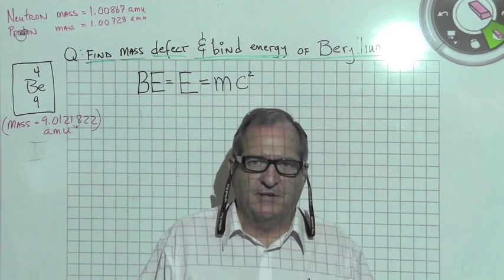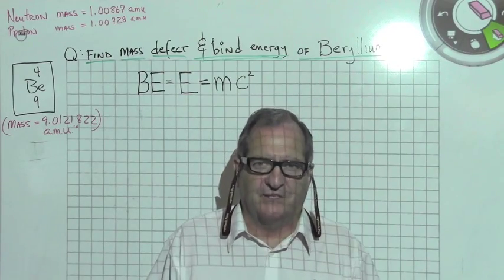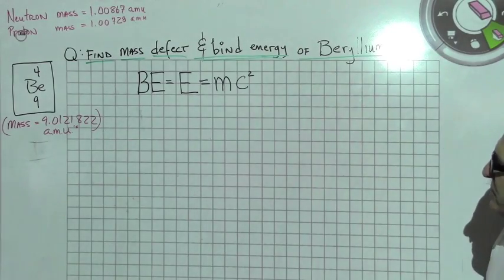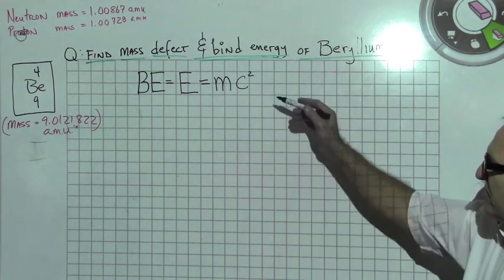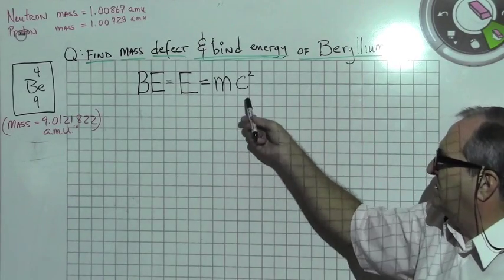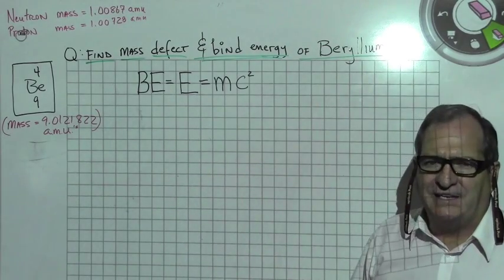It was so progressive that most scientists did not believe this could be possible at the time. So I'm going to do a problem here, but first let's talk about his famous equation. You notice I have BE here is equal to E equals mc squared. That's because BE represents binding energy.